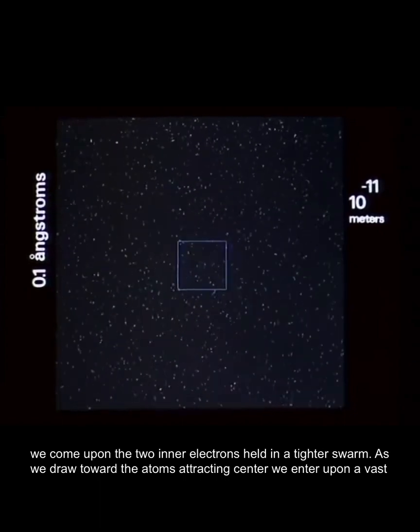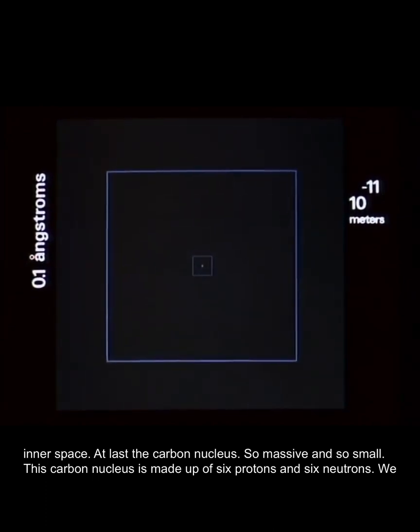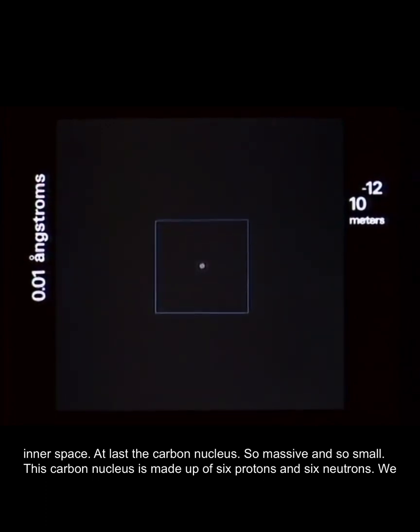As we draw toward the atom's attracting center, we enter upon a vast inner space. At last, the carbon nucleus, so massive and so small. This carbon nucleus is made up of six protons and six neutrons.